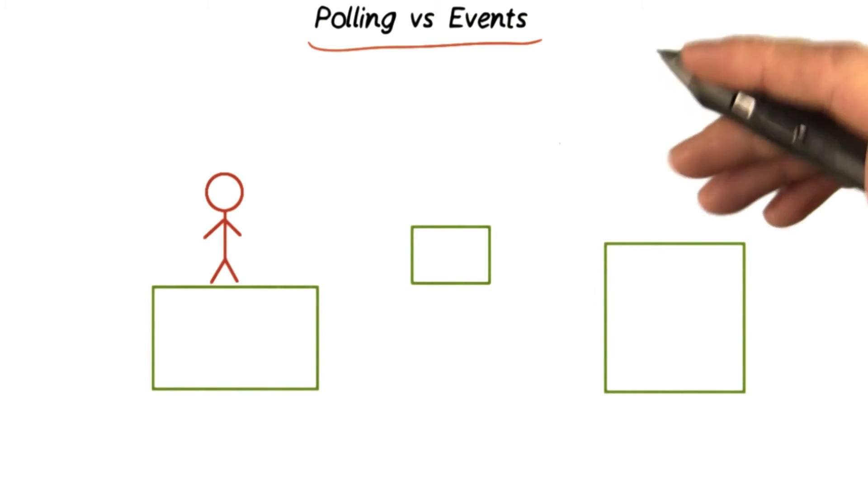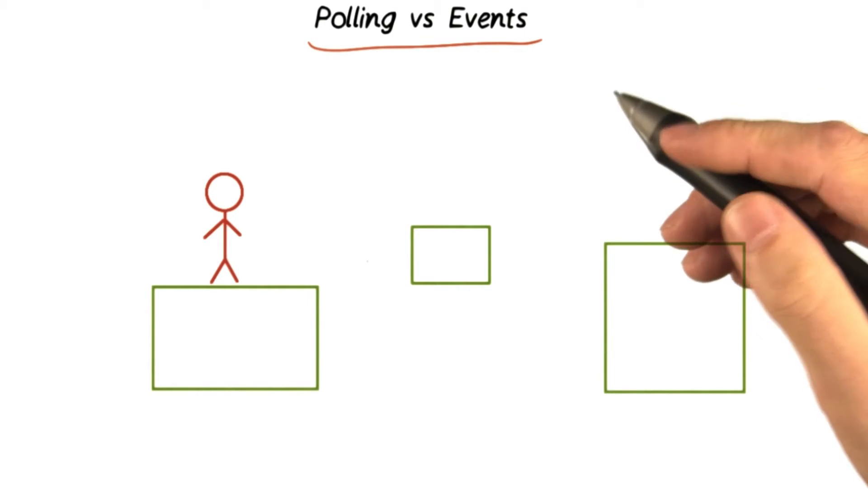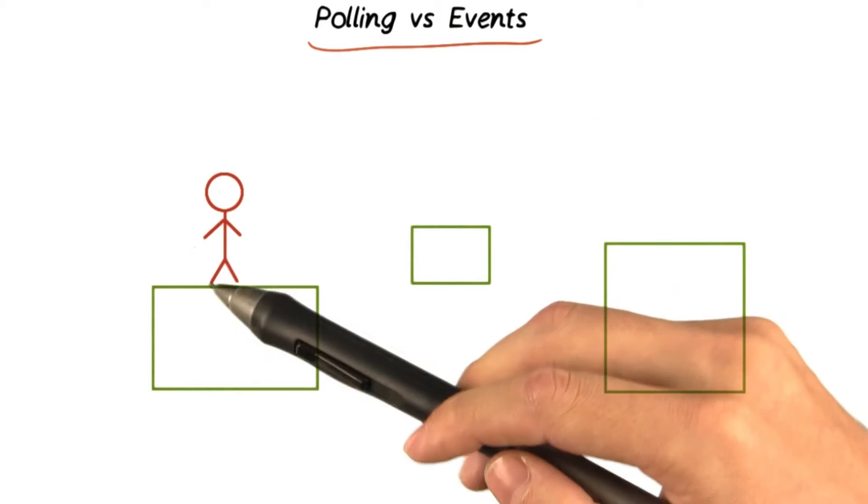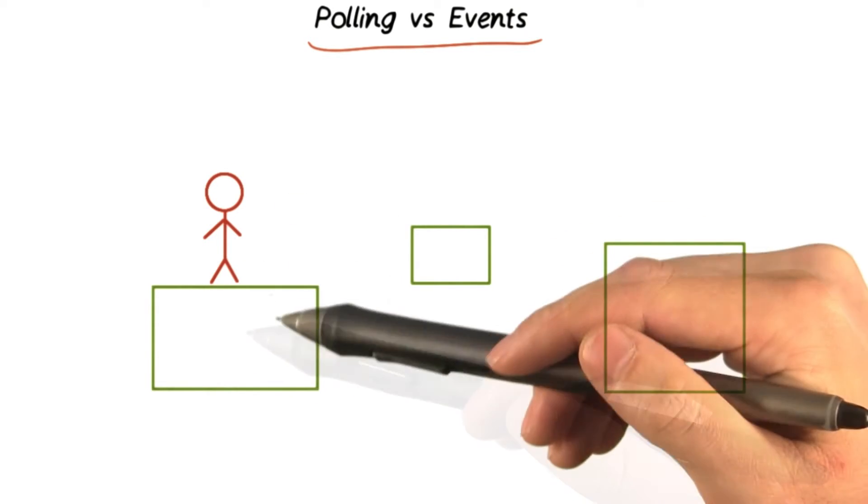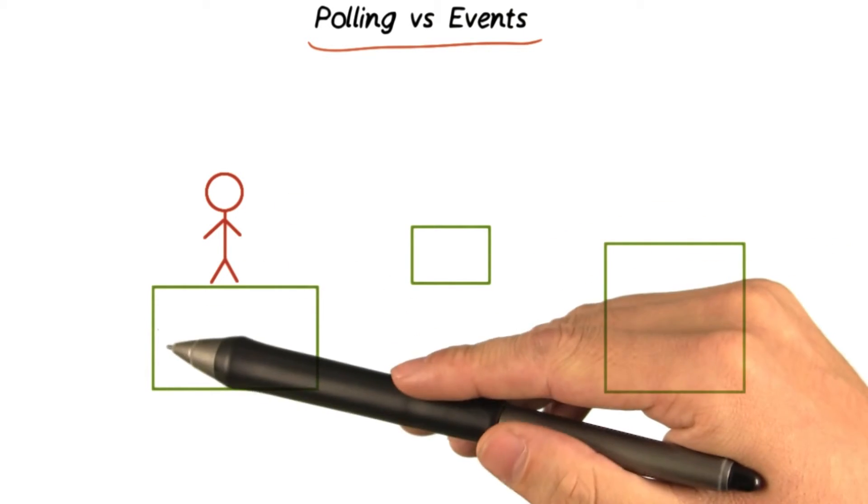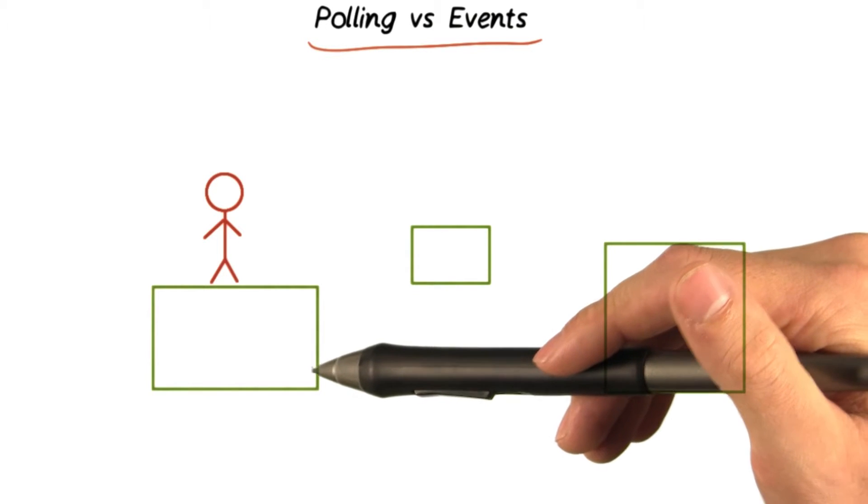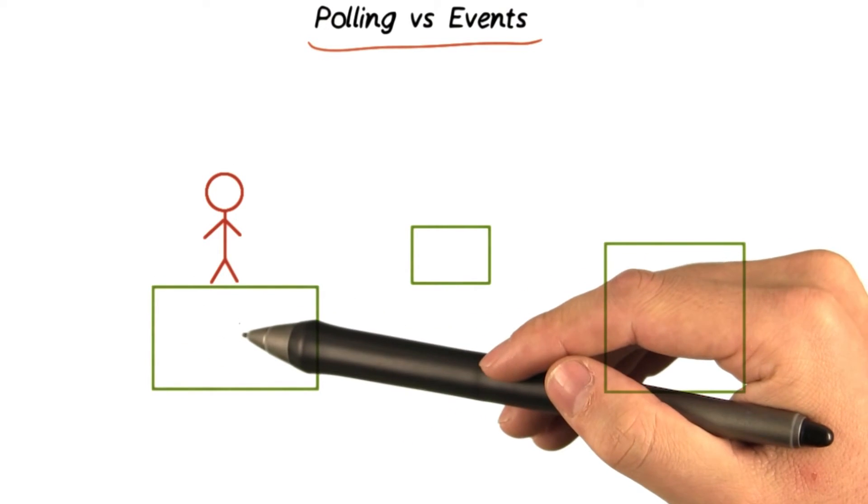There are a couple different things you might want to know about a key press. Say you're building a platformer and you want to control the left or right movement of your character using the arrow keys. Each frame, you check if the left or the right key is pressed and then move the character in the appropriate direction.